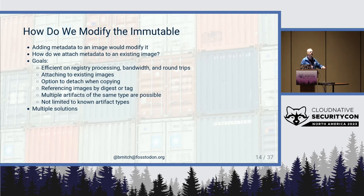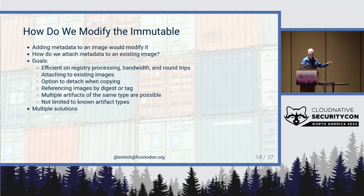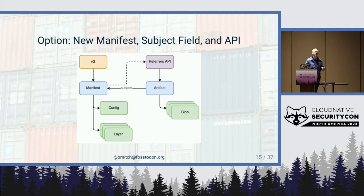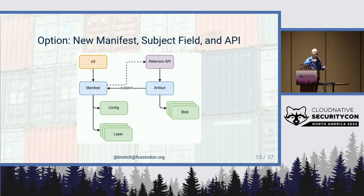The nice thing was we weren't faced with the impossible — multiple solutions already existed. The first option was from the ORAS team: a new artifact manifest pushed to the registry, with a new definition that doesn't need a config blob, just blobs of whatever the artifact needs. It includes a subject field — another descriptor with its digest — that points back to the image being extended. But from the artifact manifest there's no way to go back to the original image, so we need a new API: the Referrers API. When you query that with your manifest digest, it returns the list of descriptors for all referencing manifests. That's how the mapping was made.